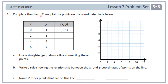Number 1 says complete the chart, then plot the points on the coordinate plane below. Here is my coordinate plane and here is the table with the x and y coordinates that I'm going to plot. It looks like number 1 has been done for us already, partially. My x-coordinate is 0, my y-coordinate is 1, together that makes 0 comma 1. To plot that, I start at the origin, go 0 units over on the x-axis because my x-coordinate is 0, so I stay at 0. Then 1 is my y-coordinate, so I move 1 unit up, and that becomes 0 comma 1.